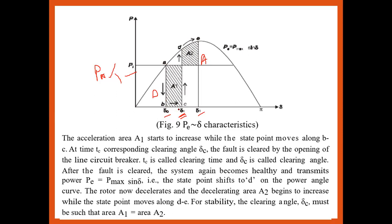The condition where the fault is cleared starts at point B and at the point of tc the corresponding clearing time is tc. So the time taken by the circuit breaker to clear the fault is called clearing time tc, and the corresponding angle is called clearing angle delta-c. After the fault is cleared, delta continues to rise, and Pe rises again — P equals Pmax times sin(delta) — from C to D then D to E. At point D on the power-angle curve, the rotor de-accelerates and the de-accelerating area A2 begins to increase.